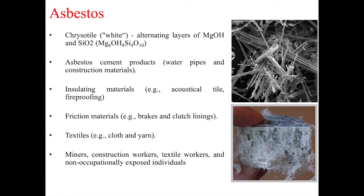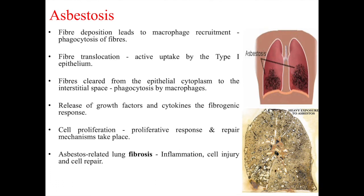Asbestos can lead to fibrosis. Asbestos is formed from chrysotile, otherwise known as white asbestos, which consists of alternating layers of magnesium hydroxide and silicon dioxide. It is found in asbestos cement products used in water pipes and construction materials, insulating materials like tiles and fireproofing, friction materials like brake and clutch linings, and sometimes in textiles like cloth and yarn. Therefore, it poses an occupational risk to miners, construction workers, textile workers, and non-occupationally exposed individuals as well.